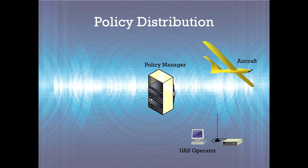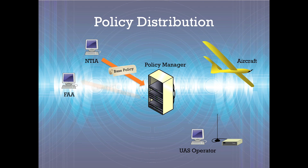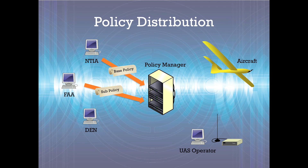A spectrum policy starts at a central spectrum manager, such as the NTIA or the FCC. This policy may not be assigned directly to an end user; rather, it may be delegated to another authority who subdivides the policy, which is further delegated, eventually creating a policy that the end user downloads from a database. In this way, the burden for spectrum management can be distributed across several entities.